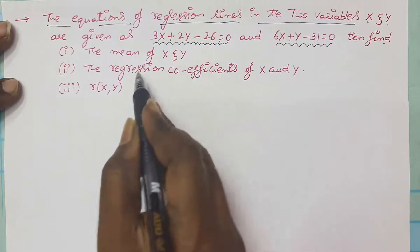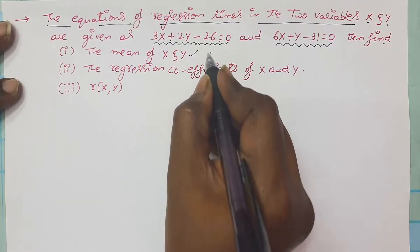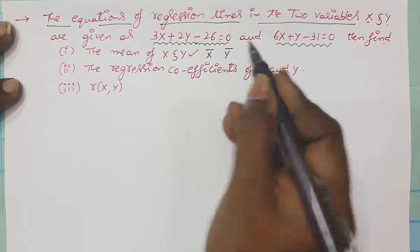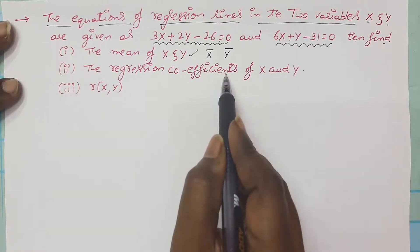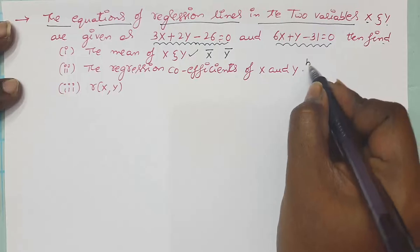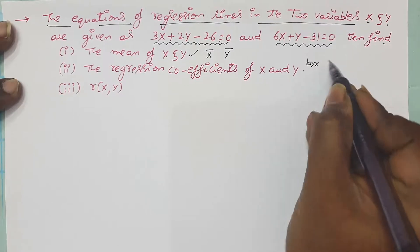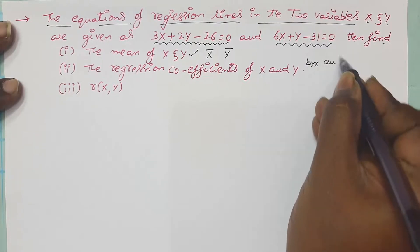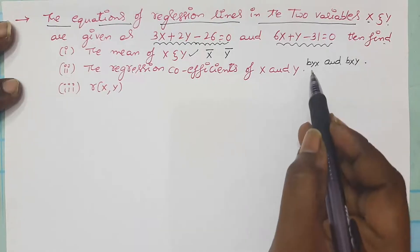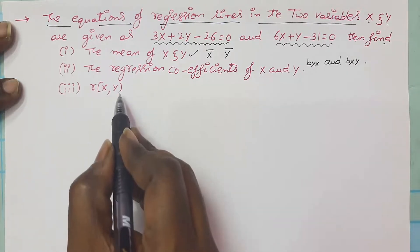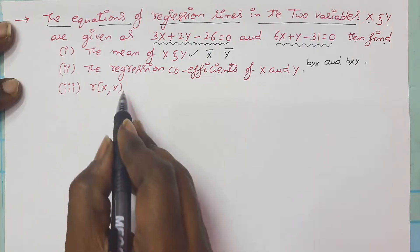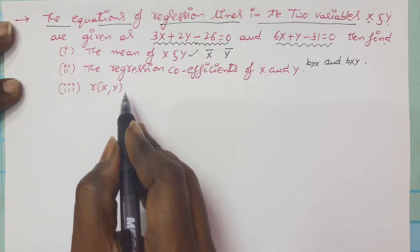We have to find the mean of x and y — that is, x̄ and ȳ. We also need the regression coefficients byx and bxy, and finally r(xy), which is also known as Karl Pearson's correlation coefficient.